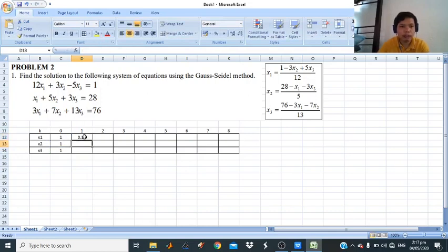So that is your new x1. Then the same for x2, we have 28 minus x1. So this is your x1, then minus 3 times x3. Then divided by 5. So this is your new x2.